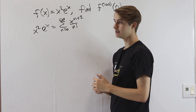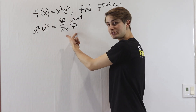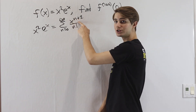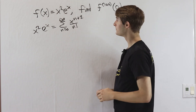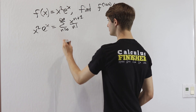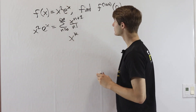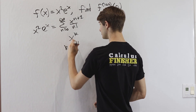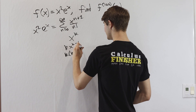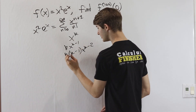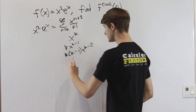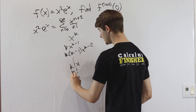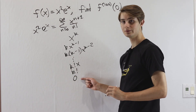Instead of working with the original function, let's look at the Taylor series. Notice that it's entirely in terms of polynomials — x to some power. If we think about the derivatives of x to the k: differentiating gives k times x to the k minus 1, then k times k minus 1 times x to the k minus 2, and so on, all the way down to k factorial times x, then k factorial, and finally, when we differentiate that constant, we go down to zero.